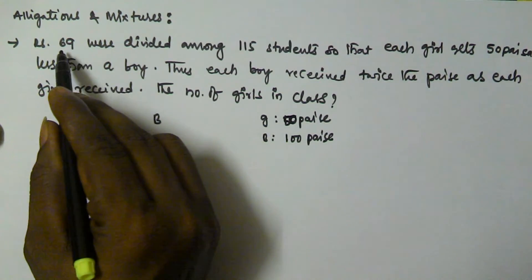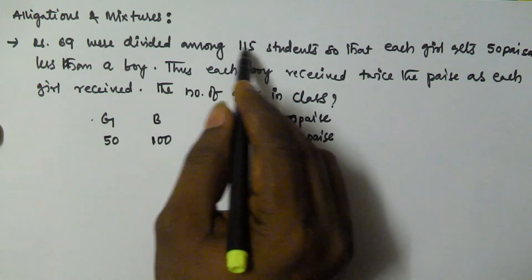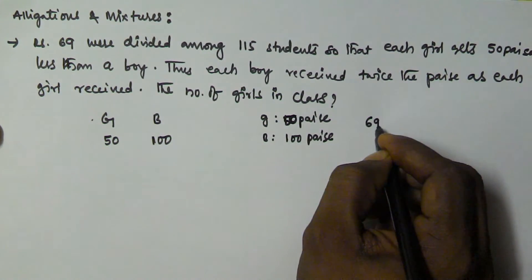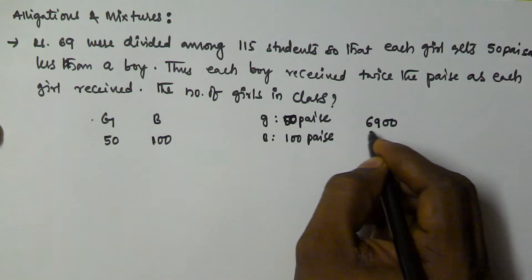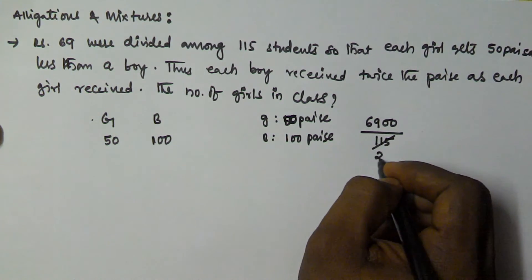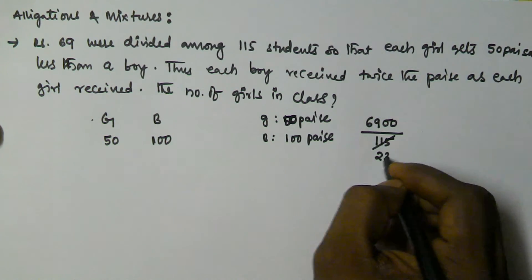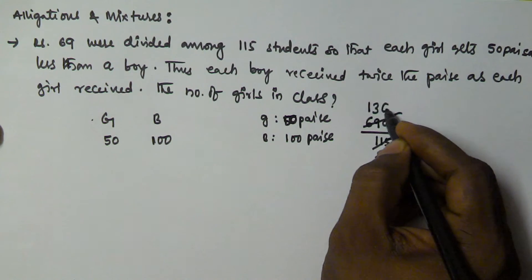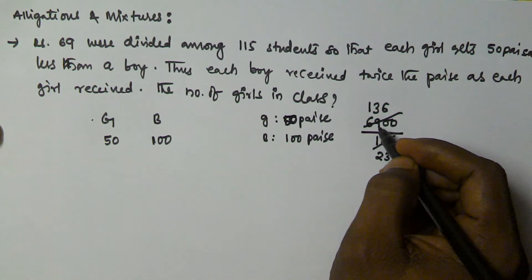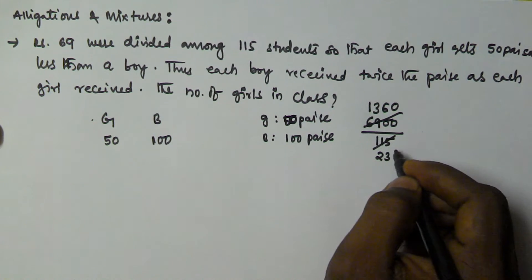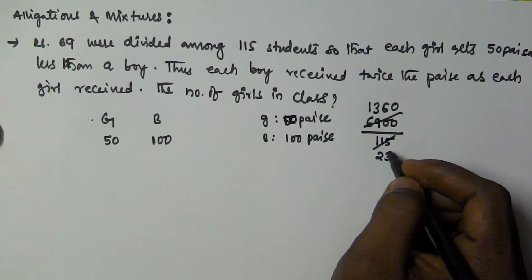So if you see this, 69 rupees divided among 115 students, that means 69 rupees converted into paisa is 6900 paisa divided by 115 students.